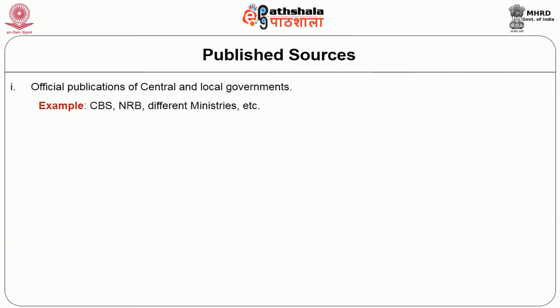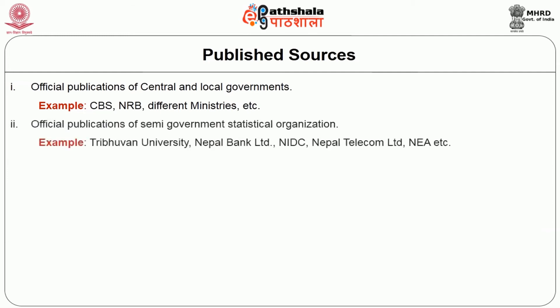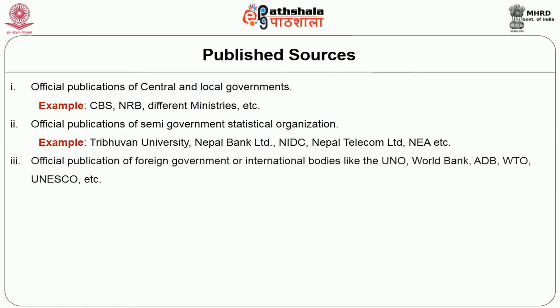The sources of published data are as below. First, official publications of central and local government — for example, CBS, NRB, different ministries etc. Second, official publications of semi-government statistical organizations — for example, Tribhuvan University, Nepal Bank Limited, NIDC, Nepal Telecom Limited, NEA etc. Third, official publications of foreign government or international bodies like UNO, World Bank, ADB, WTO, UNESCO etc.